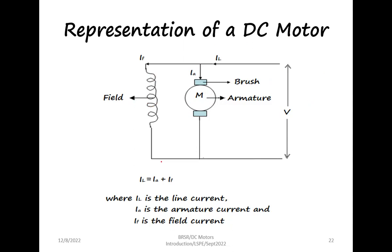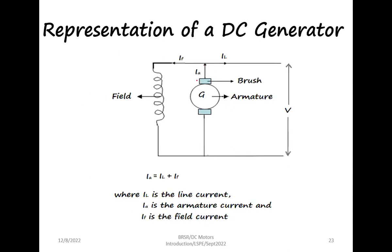When it is a DC motor, the representation shows the motor circle with two brushes and the field represented alongside. The supply voltage is marked as V. The current taken from the supply, called the line current I, splits into two parts: armature current and field current. The line current equals the sum of the field current and the armature current. But if it is a generator, the machine is marked with the letter G. Current comes out of the generator marked as IA, and this splits into two parts — one for the field and one as the line current. So for a generator, the armature current is the sum of the field current and the line current.